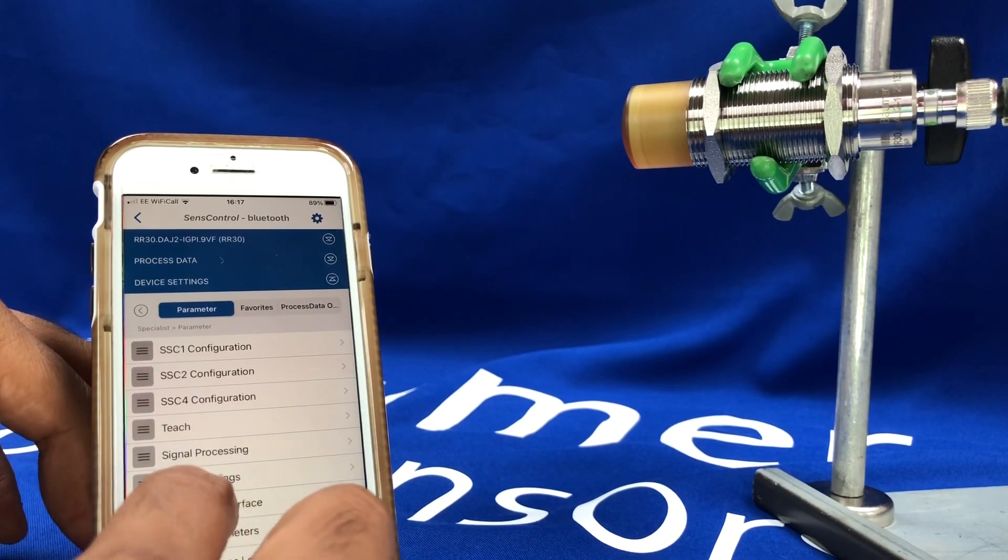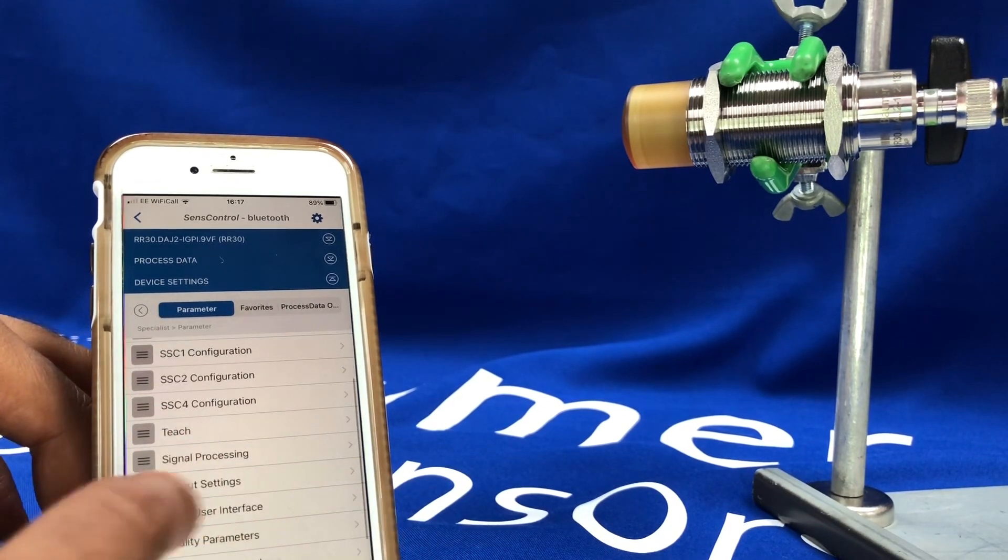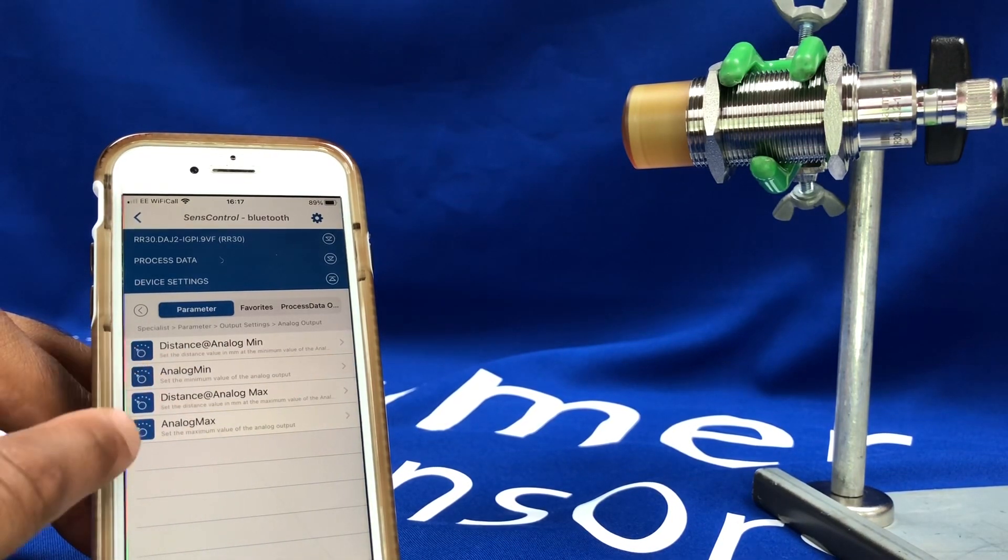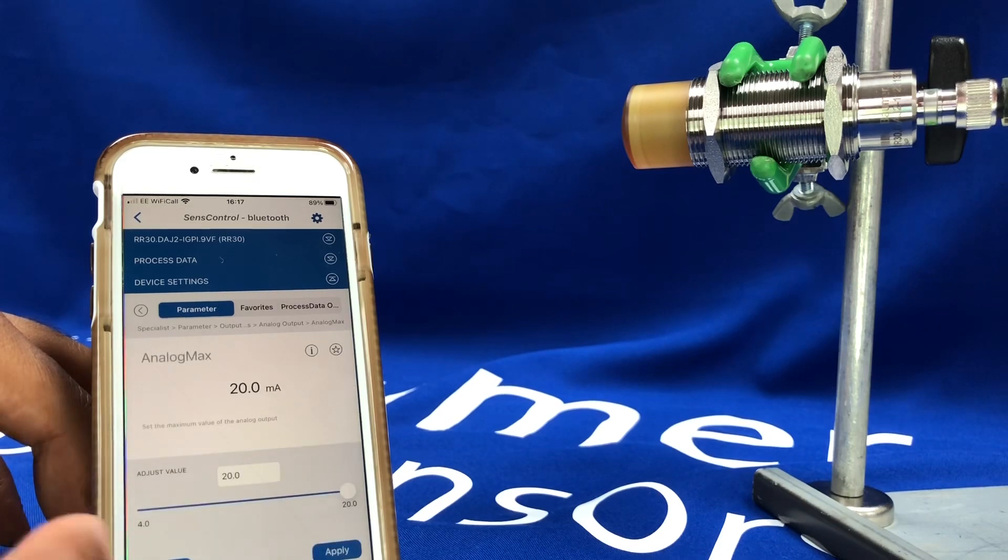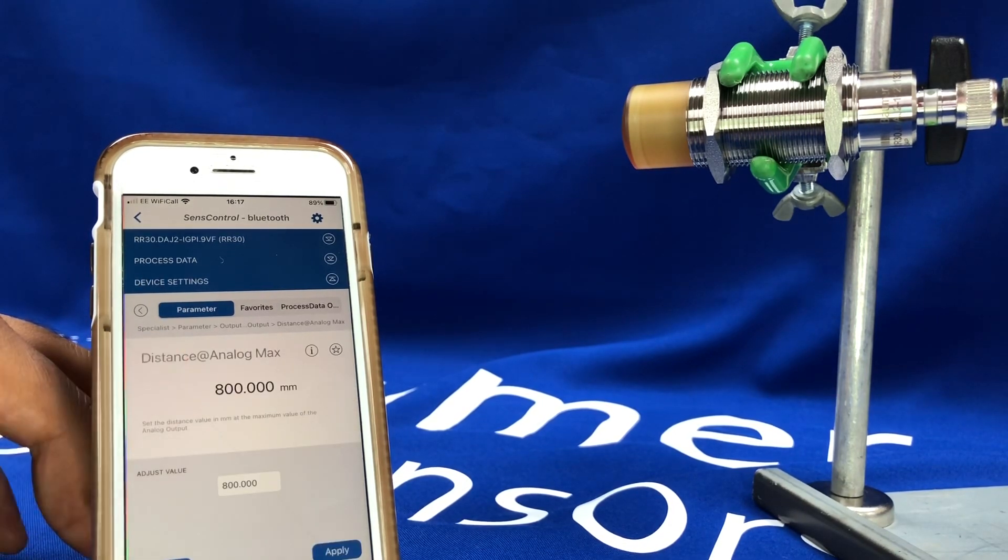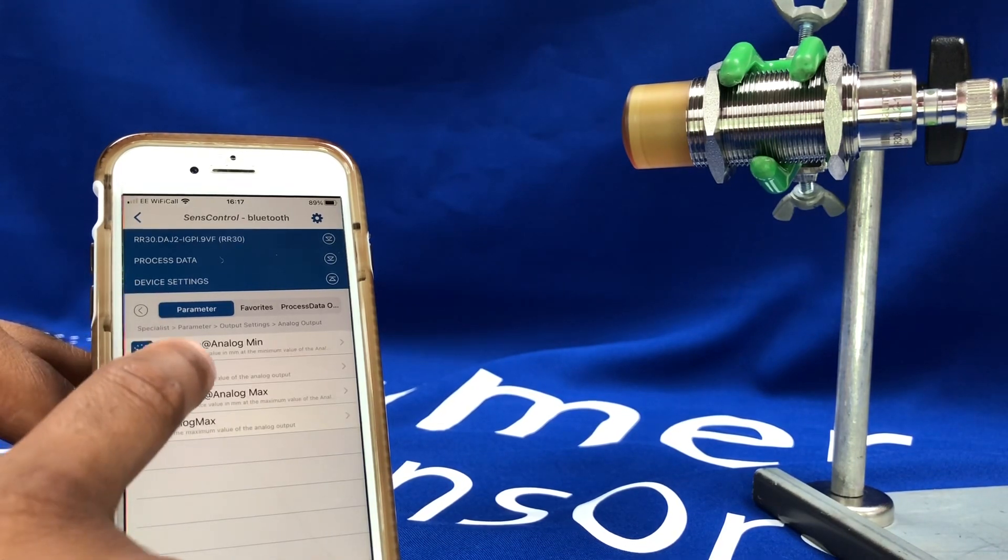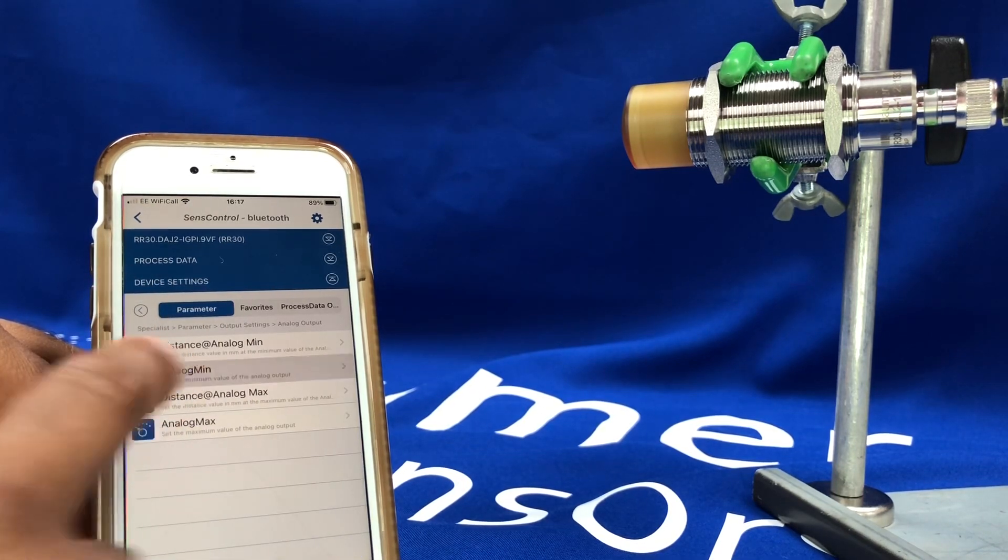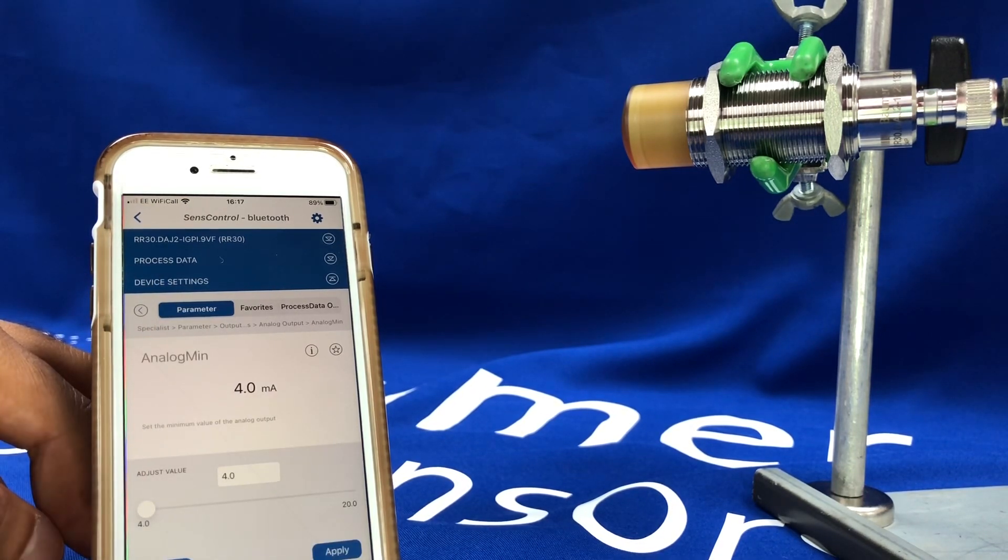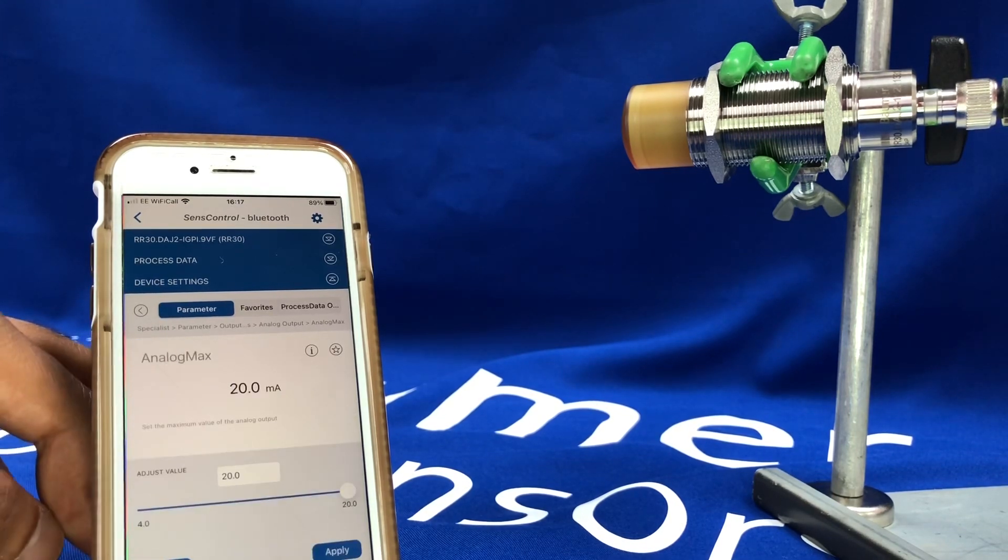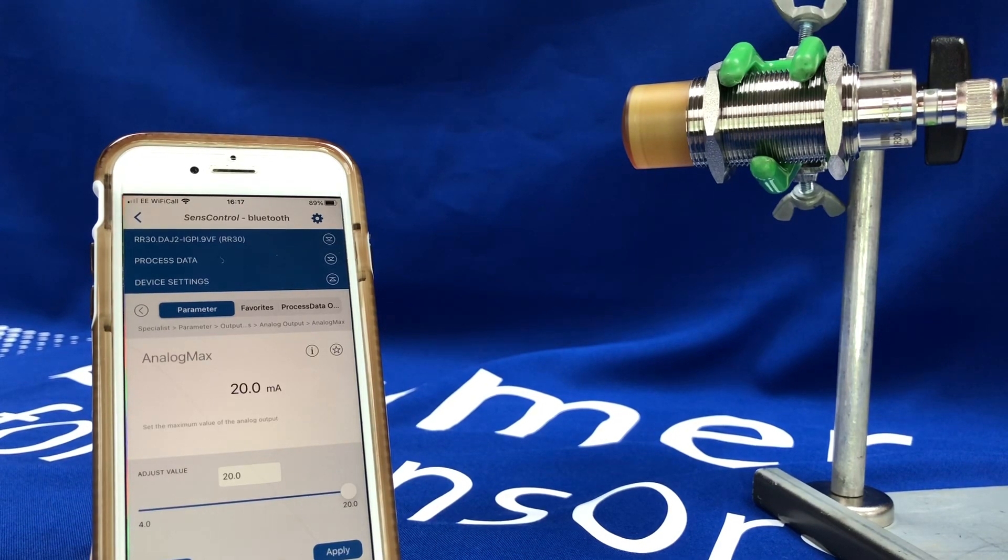In the output settings, you can select the analog output, set the minimum and maximum ranges, and also the milliamp for those. So I set the maximum range at 800mm and the minimum range at 300mm, with the analog minimum at 4mA and maximum 20mA to scale that 300mm to 800mm over.